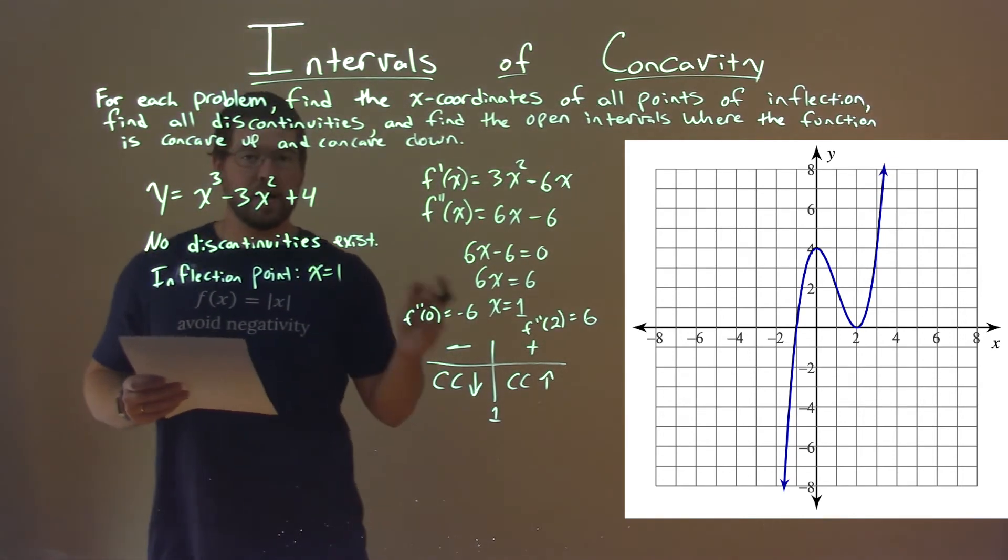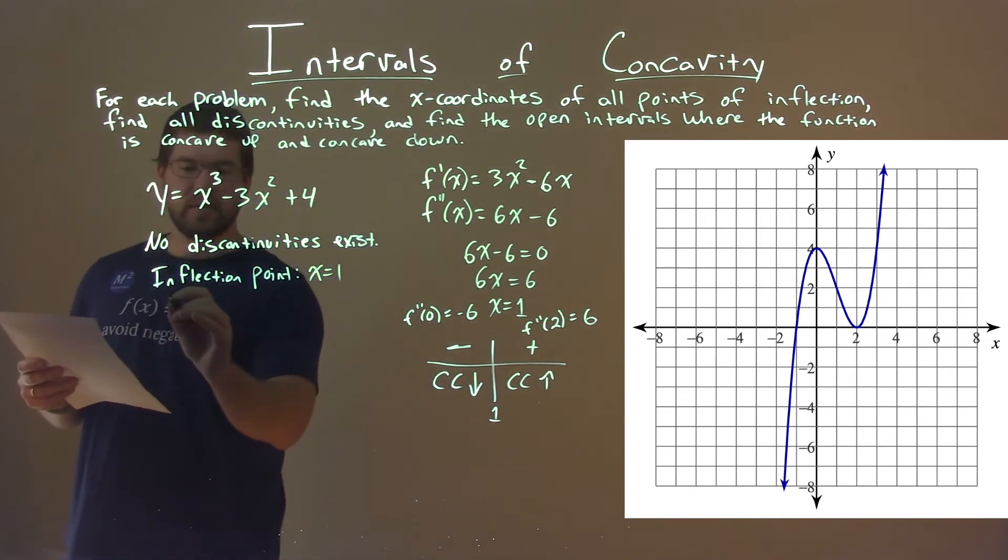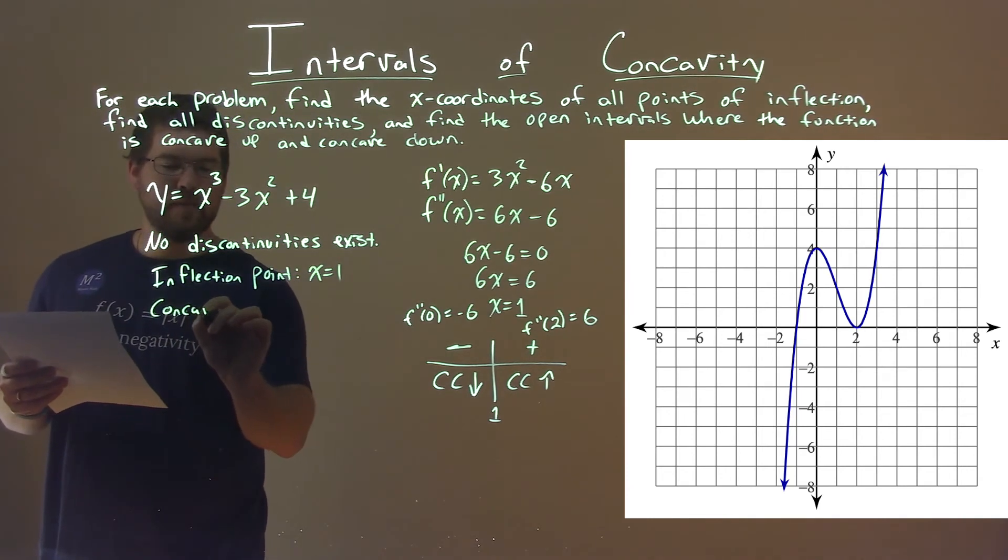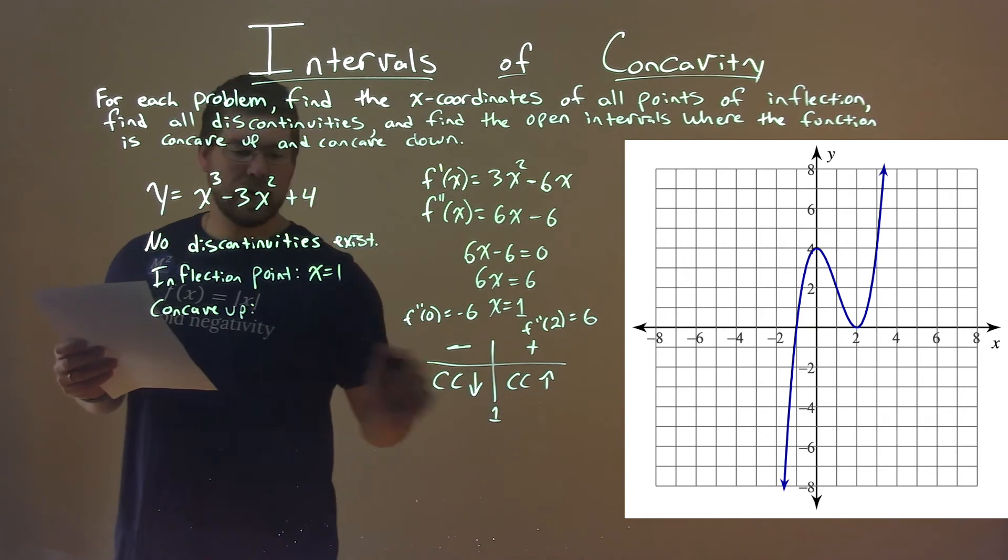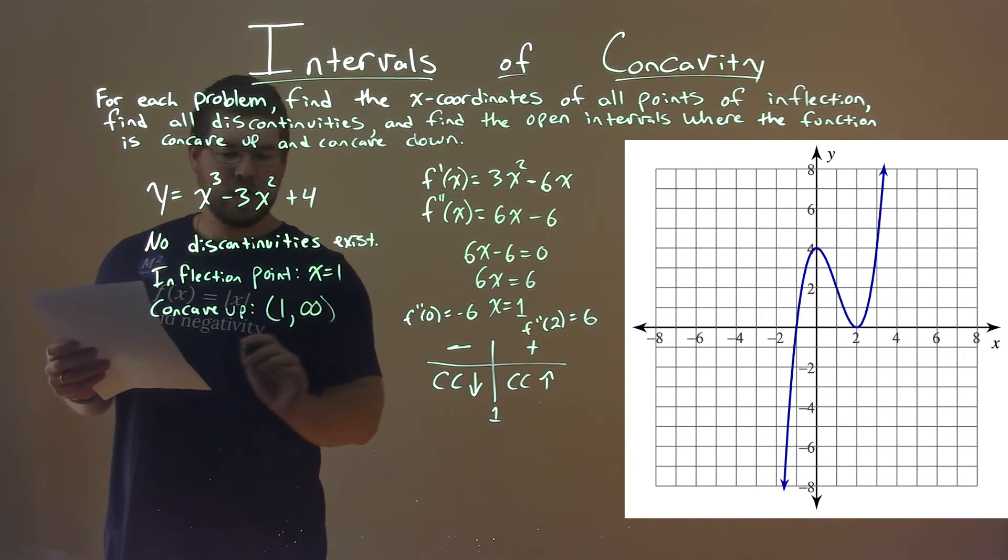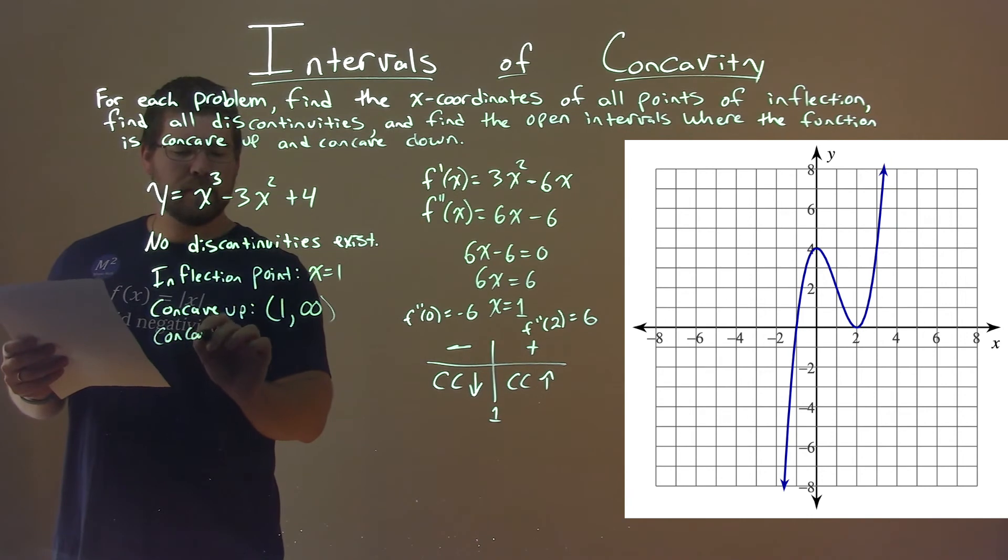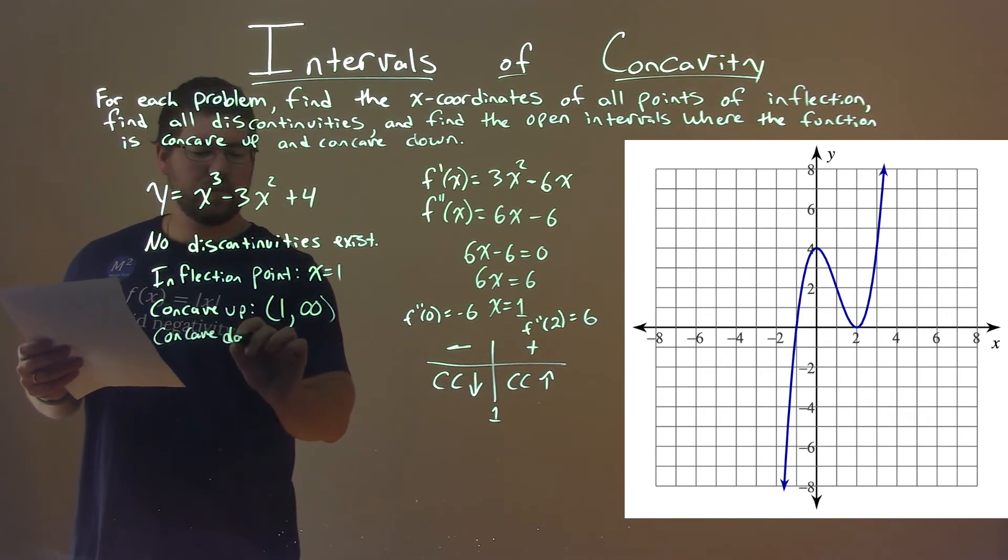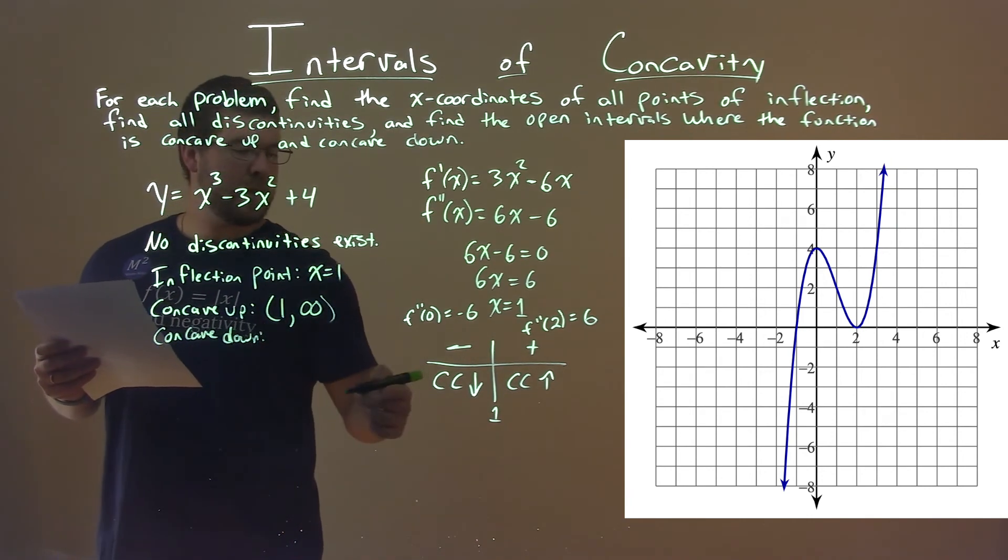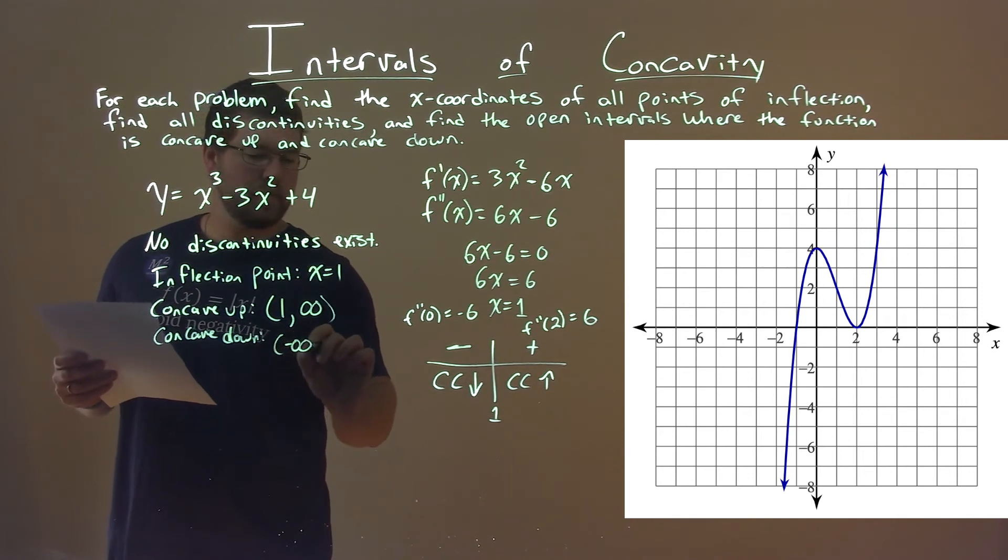And now, let's say the intervals where we're concave up and concave down. We're concave up on the interval from 1 to positive infinity. And we're concave down from negative infinity to positive 1.